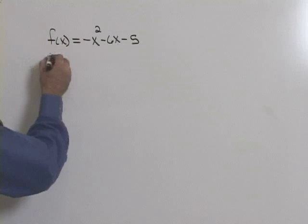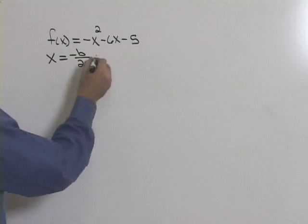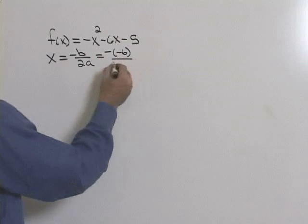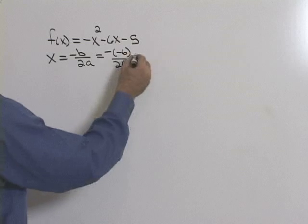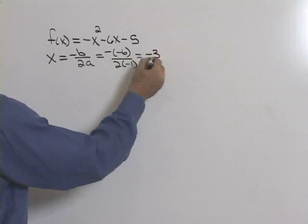To find the vertex, we can find the x-coordinate by plugging into -b/2a. We know that b is -6, so we'll have -(-6) over 2 times a, which is -1. So this will be 6 over -2, so x is -3.